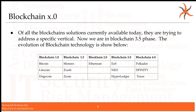Even in the blockchain 1.0 era, if you were not using the same address all the time, you could obfuscate that activity — but you had to make sure you used a new address for every transaction. The introduction of blockchain 1.5 technologies such as Monero, Zcash, and Zcoin introduced the ability to anonymize transactions at the blockchain level.